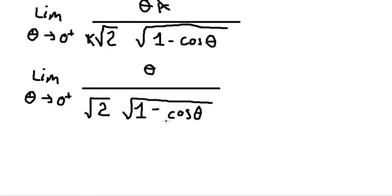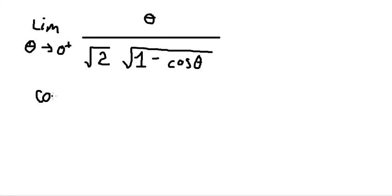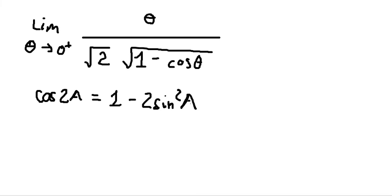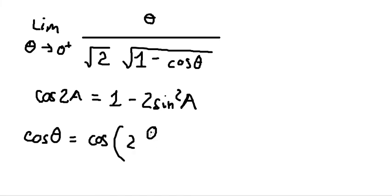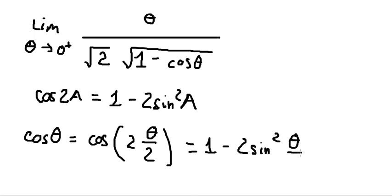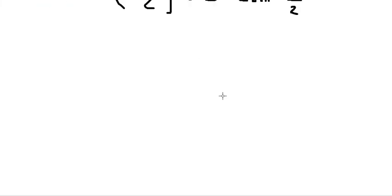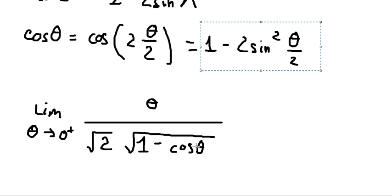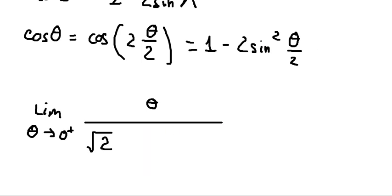Now we consider cosine theta. We use the double angle formula: cosine 2A equals 1 minus 2 sine squared A. So cosine theta equals cosine of 2 times (theta over 2), which we can rewrite as 1 minus 2 sine squared (theta over 2). We substitute this expression into our formula for d.